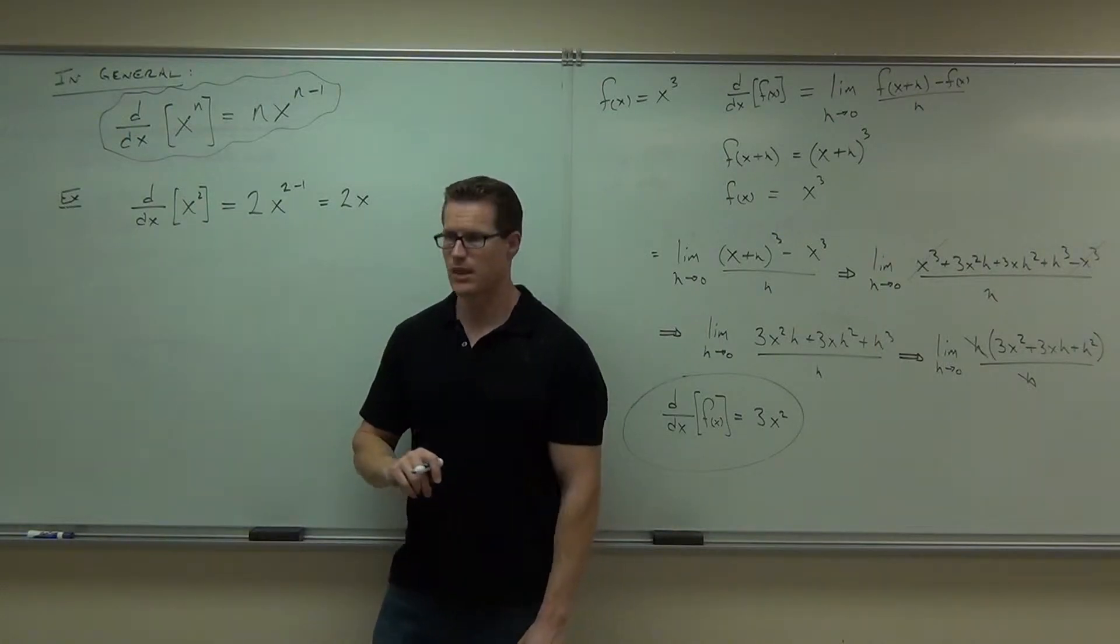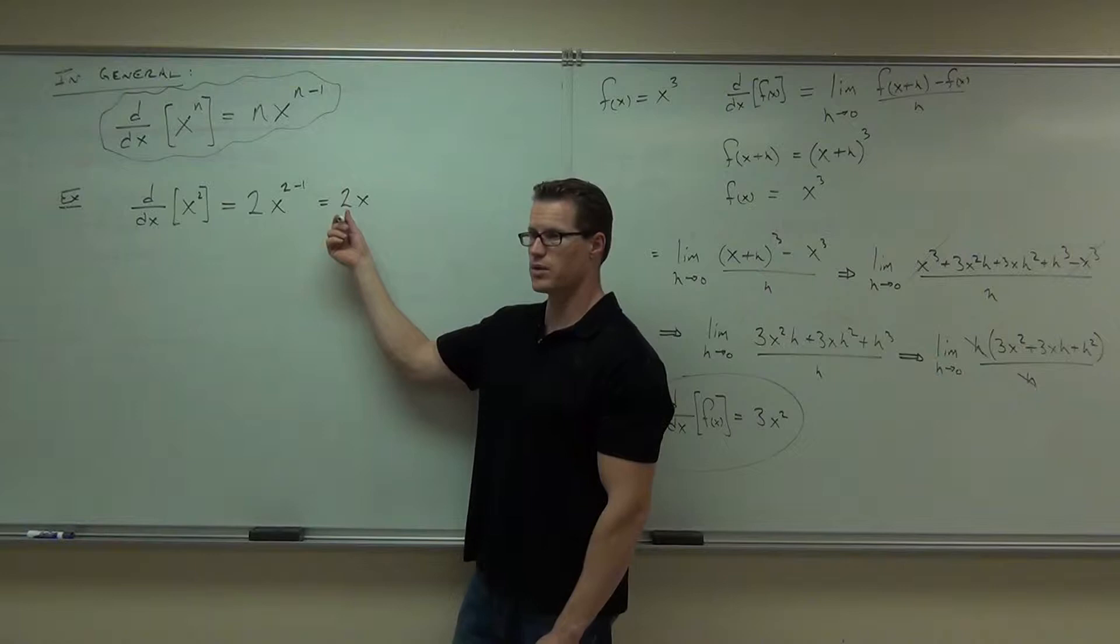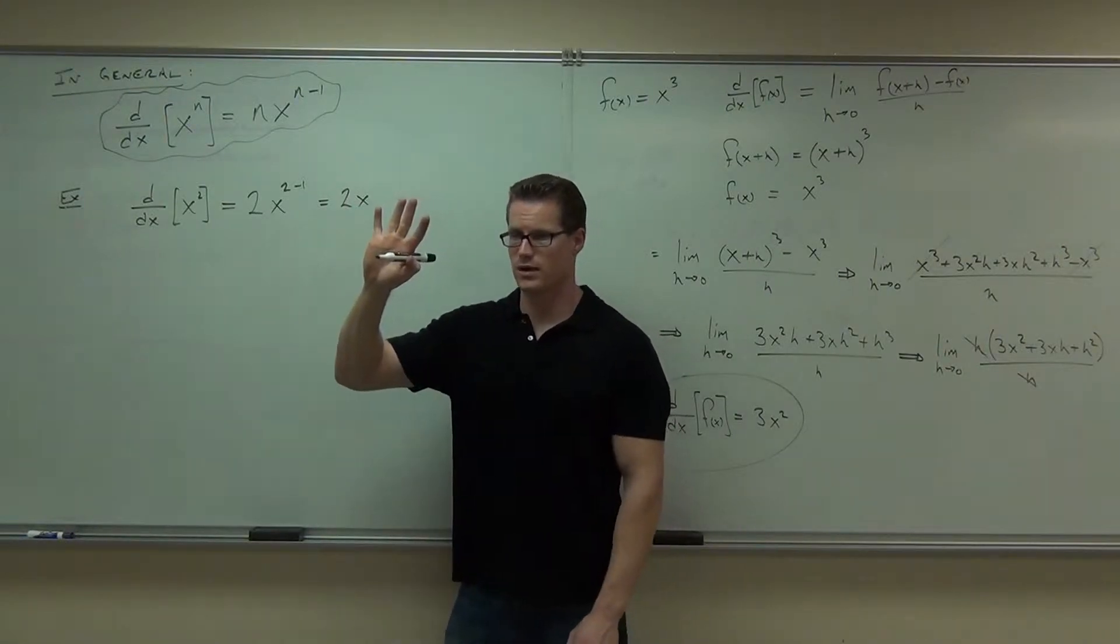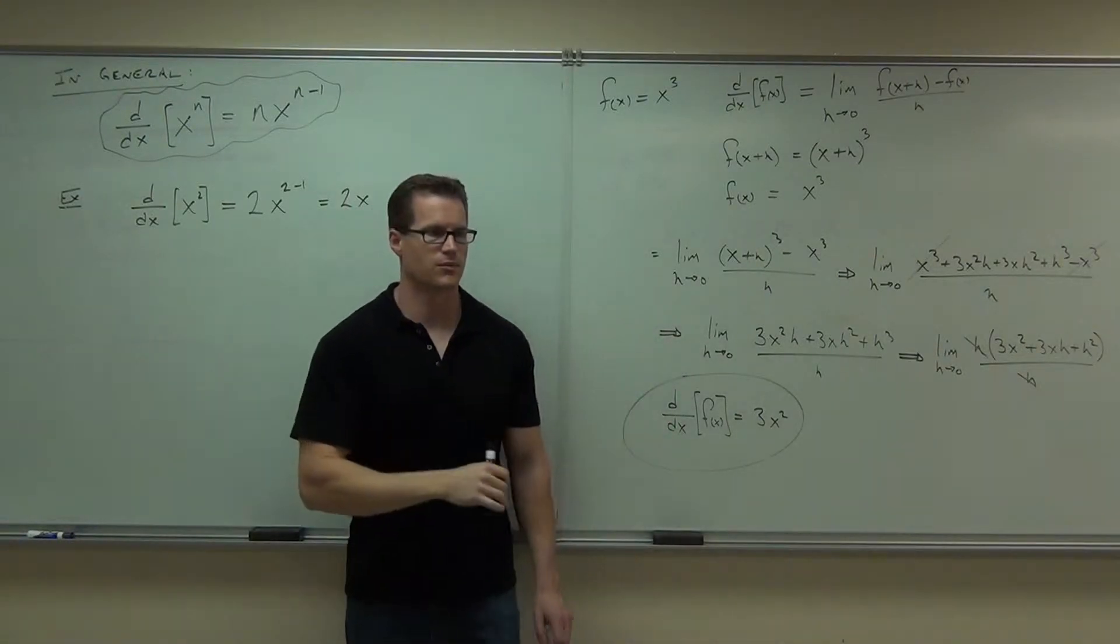Can you do it? Yeah, at 2 comma 4, here's your slope, right? Plug in 2, you get a slope of 4. Now you have a point and you have a slope. It's very quick. Very, very quick.